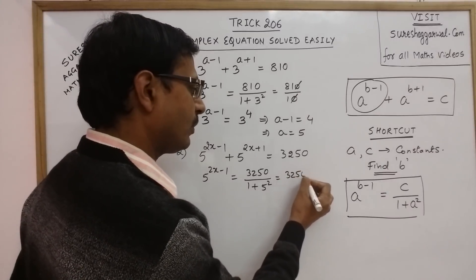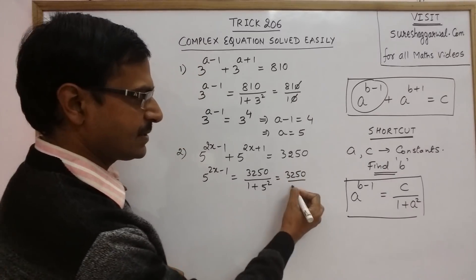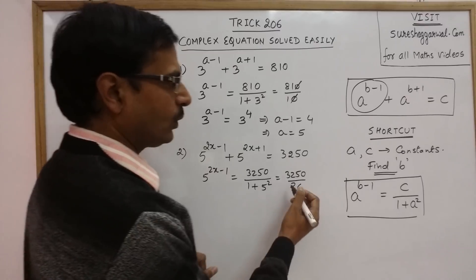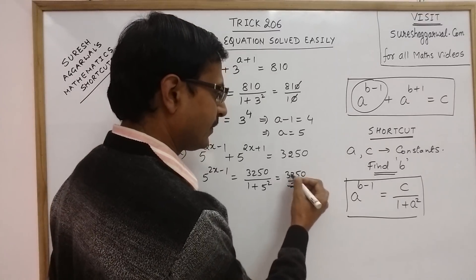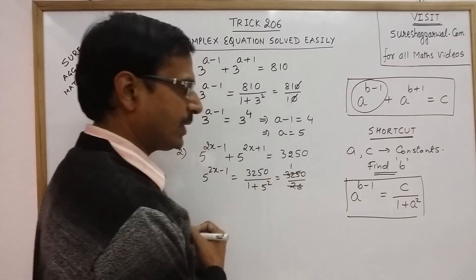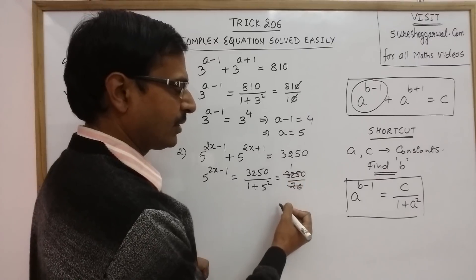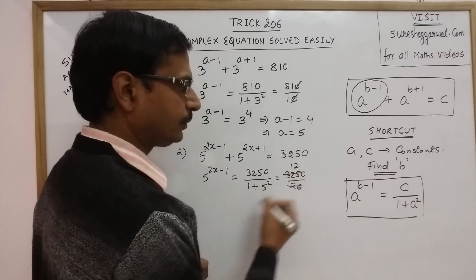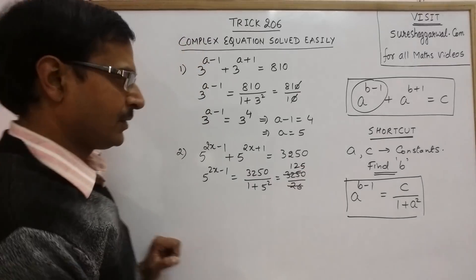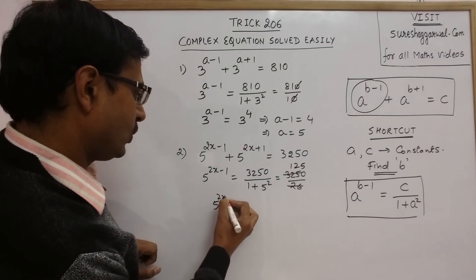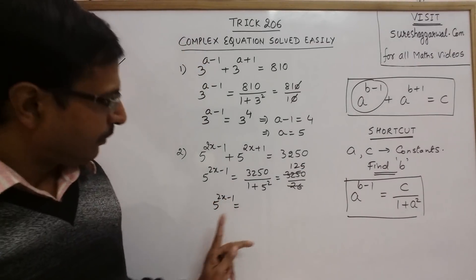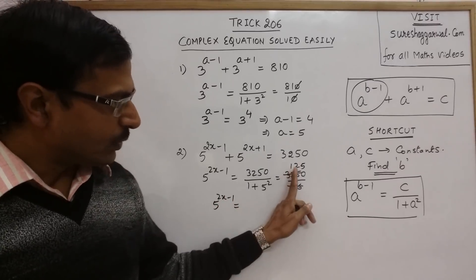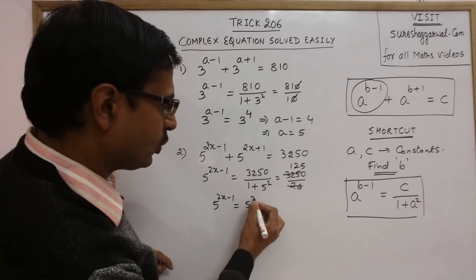So, 3250 upon this is 26 and when you cancel this with 26, you have 2x minus 1 is equal to 5 raise to power 2x minus 1 equal 125 and 125 is 5 cube.